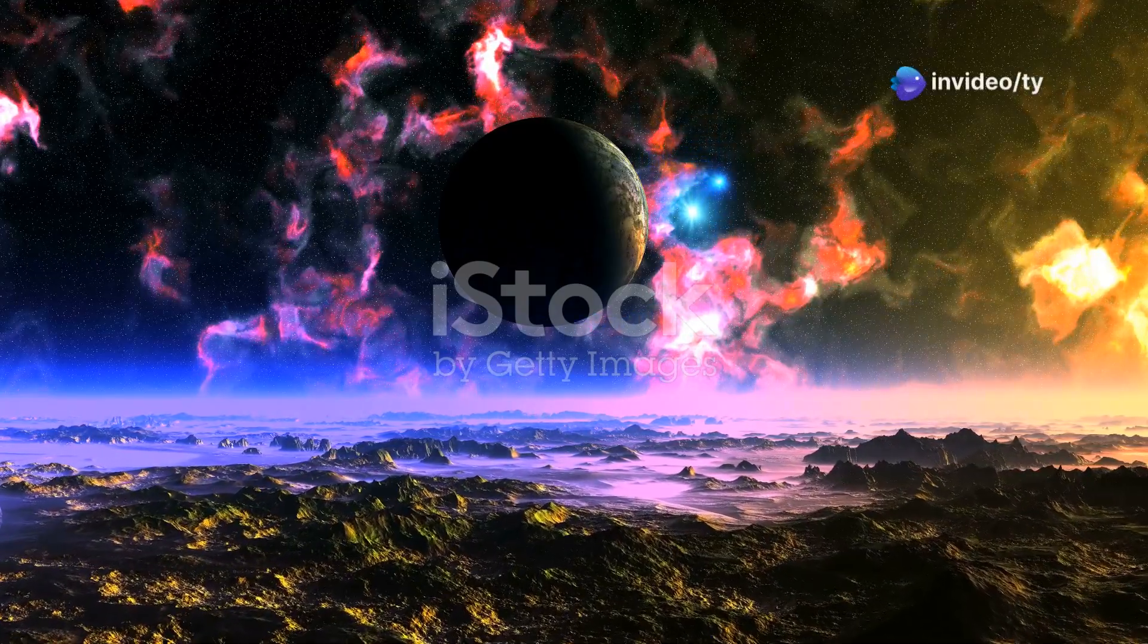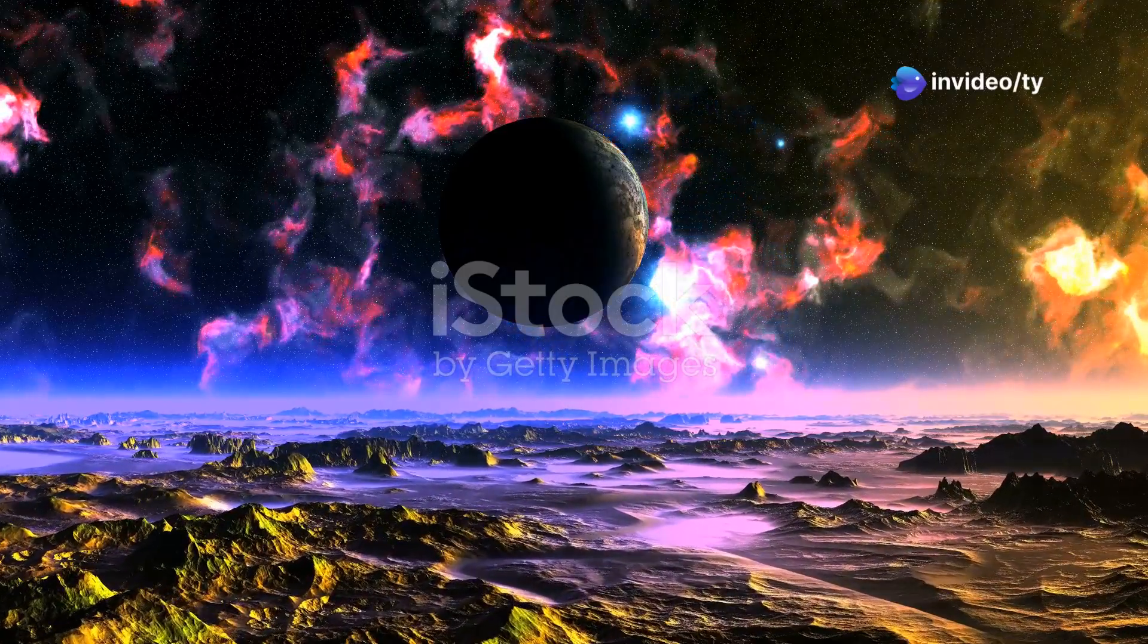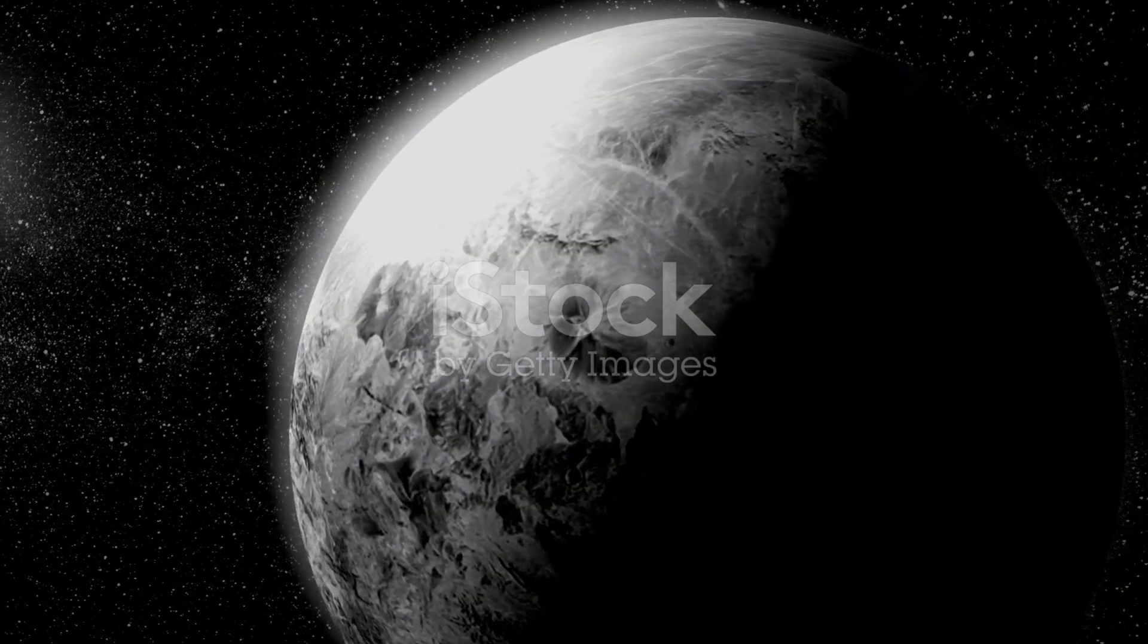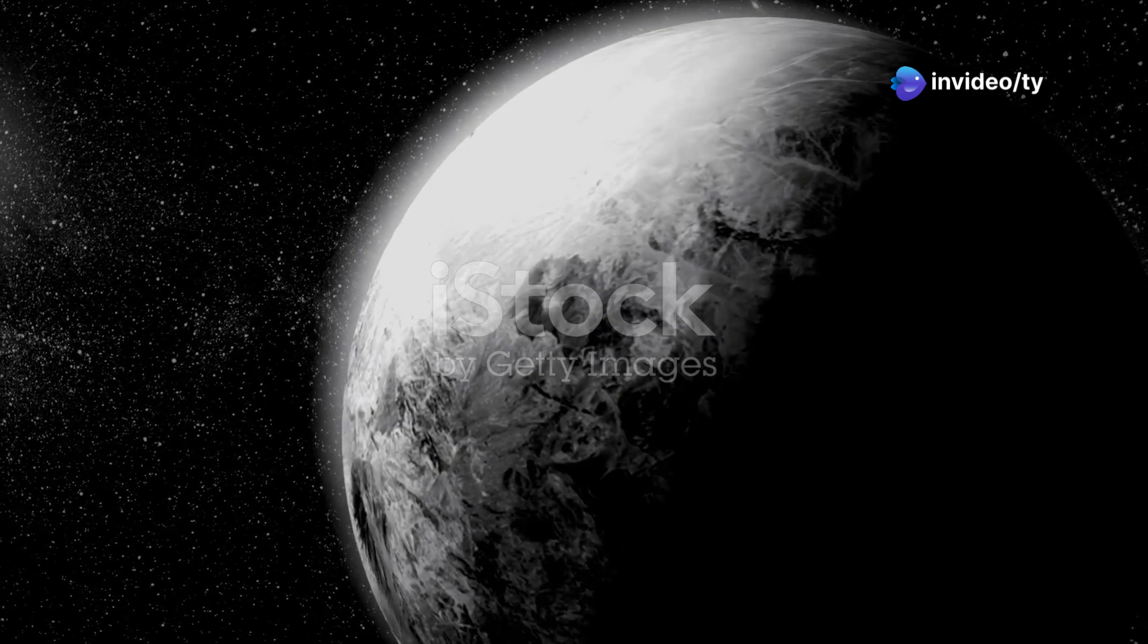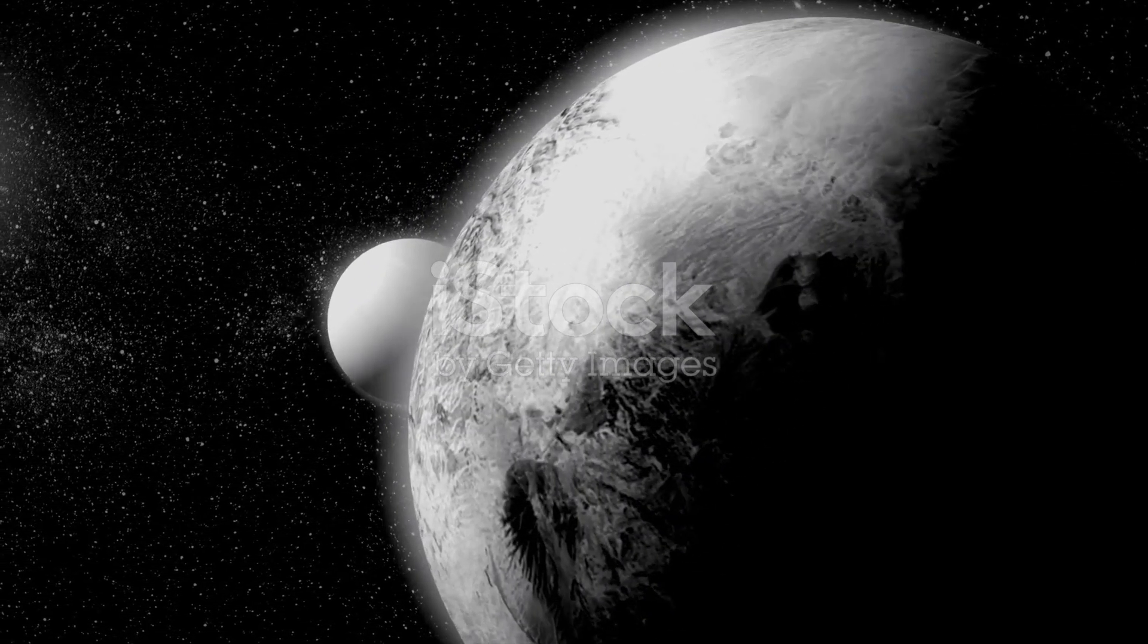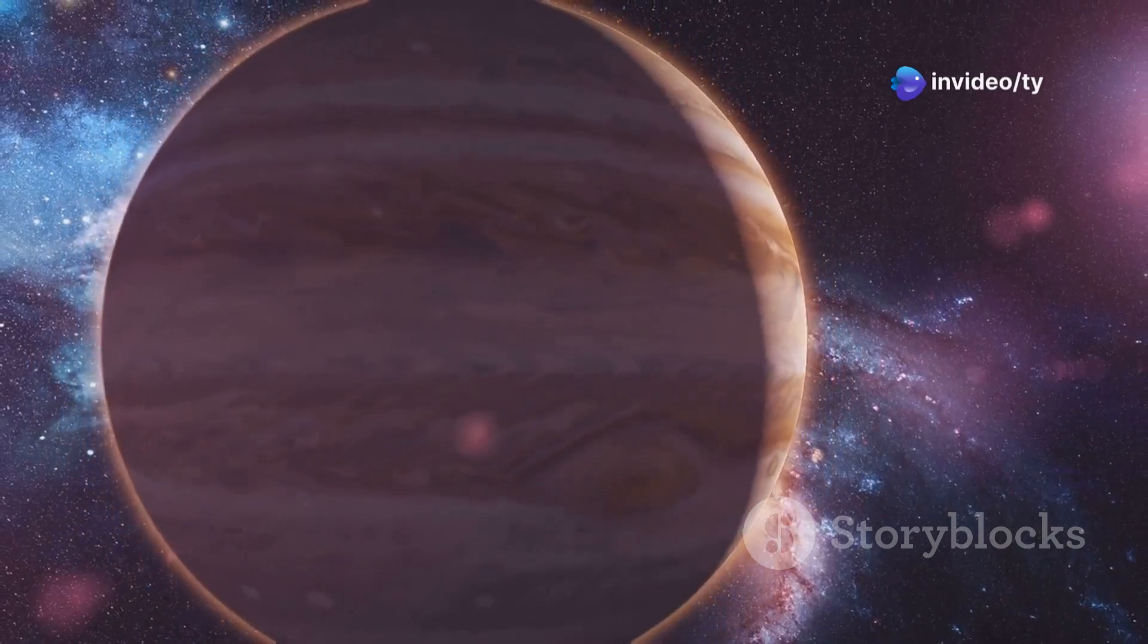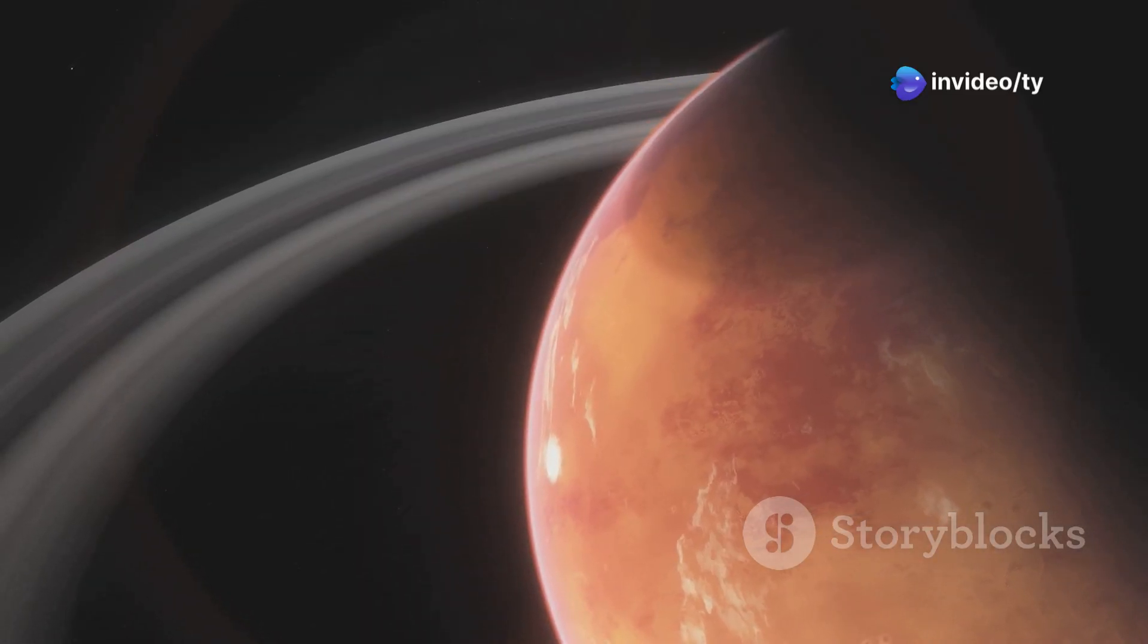Our next destination takes us to a place where the weather forecast is always extreme. Imagine a world where the skies are filled with storms so intense they defy our earthly understanding of weather. This is HD 189733b, a gas giant located about 63 light years away in the constellation Vulpecula. It's a world that challenges our perceptions of what a planet can be. Now you might be thinking a gas giant, that doesn't sound very unbelievable. After all our own solar system has gas giants like Jupiter and Saturn, but hold on because this is no ordinary gas giant.